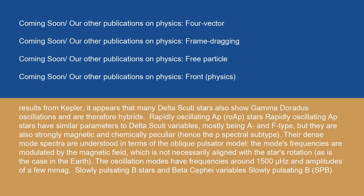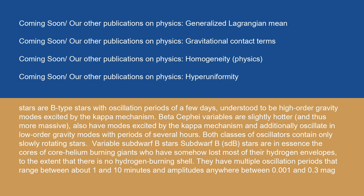Rapidly oscillating Ap (roAp) stars: rapidly oscillating Ap stars have similar parameters to delta Scuti variables, mostly being A and F-type, but they are also strongly magnetic and chemically peculiar, hence the 'p' spectral subtype. Their dense mode spectra are understood in terms of the oblique pulsator model. The mode frequencies are modulated by the magnetic field, which is not necessarily aligned with the star's rotation. The oscillation modes have frequencies around 1500 μHz and amplitudes of a few mmag. Slowly pulsating B (SPB) stars are B-type stars with oscillation periods of a few days, understood to be high-order gravity modes excited by the kappa mechanism. Beta Cephei variables are slightly hotter and thus more massive, also have modes excited by the kappa mechanism, and additionally oscillate in low-order gravity modes with periods of several hours. Both classes of oscillators contain only slowly rotating stars.